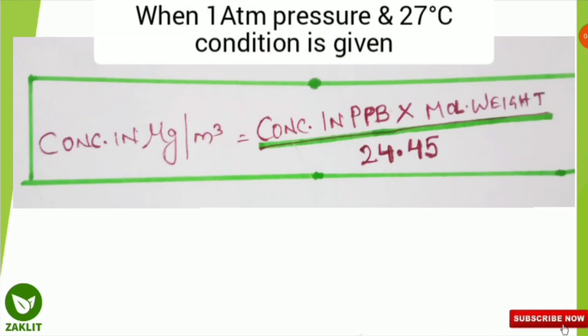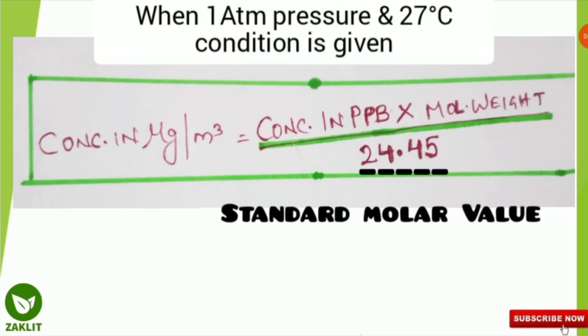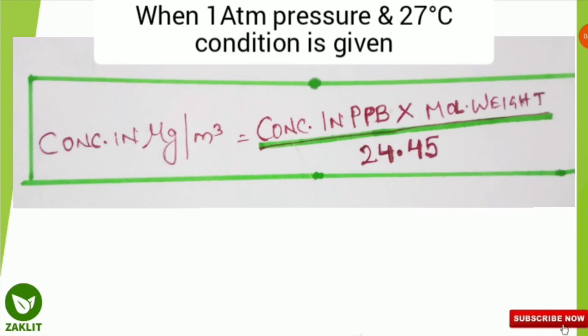The formula is: concentration in micrograms per meter cube equals concentration in parts per billion (ppb) multiplied by the molecular weight of the substance, divided by 24.45. What is 24.45? It is the standard molar volume — you should remember that 24.45 liters is the standard molar volume, which will help you solve this kind of question. This formula is very important.